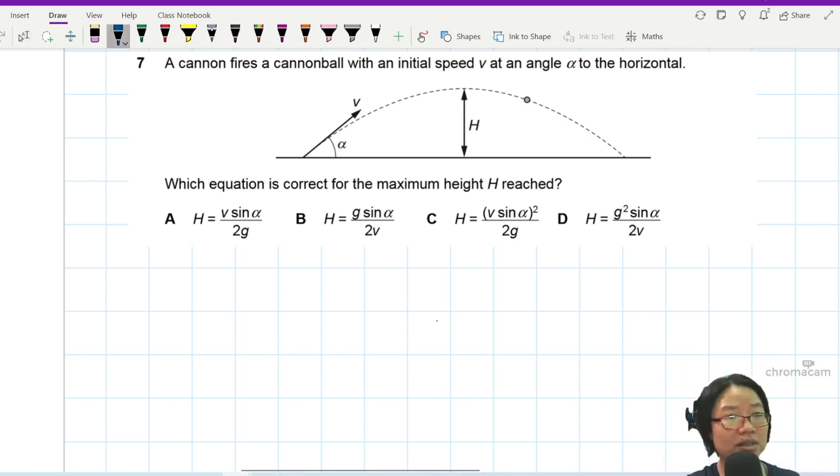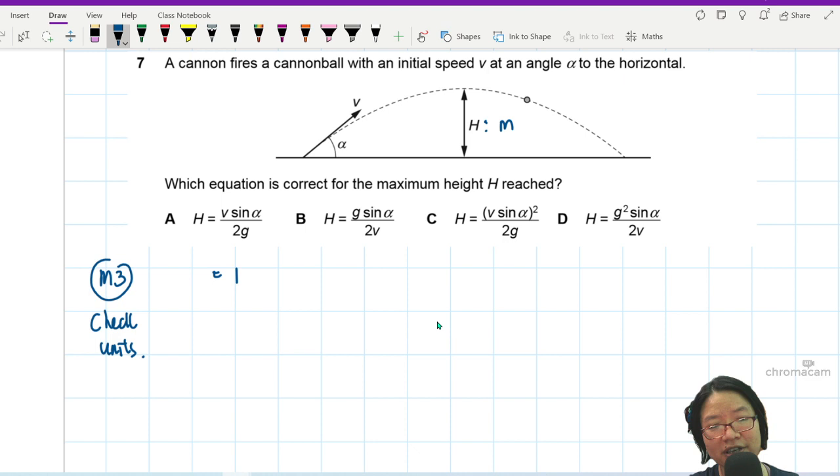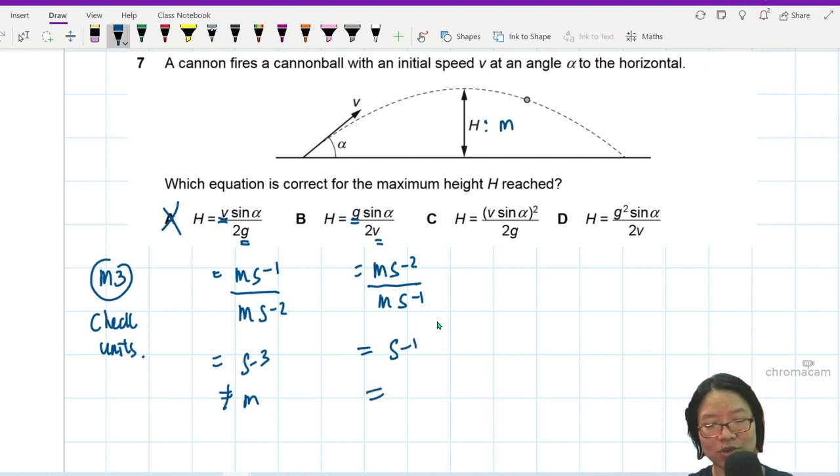Method 3 is to check units. Miss, can check units? I can. Unit is H. H must be in meters, in SI units. So I'm going to check the SI unit for V. This is MS^-1 for V, and then G. Because sine alpha has no unit, and G will be MS^-2. So A is out already because the unit doesn't work. This is S^-3 and it's not M. Wrong. Let's look at this one. This G is MS^-2, and then V is MS^-1. This is actually equal to S^-1, which once again is not equal to M. So it's wrong.